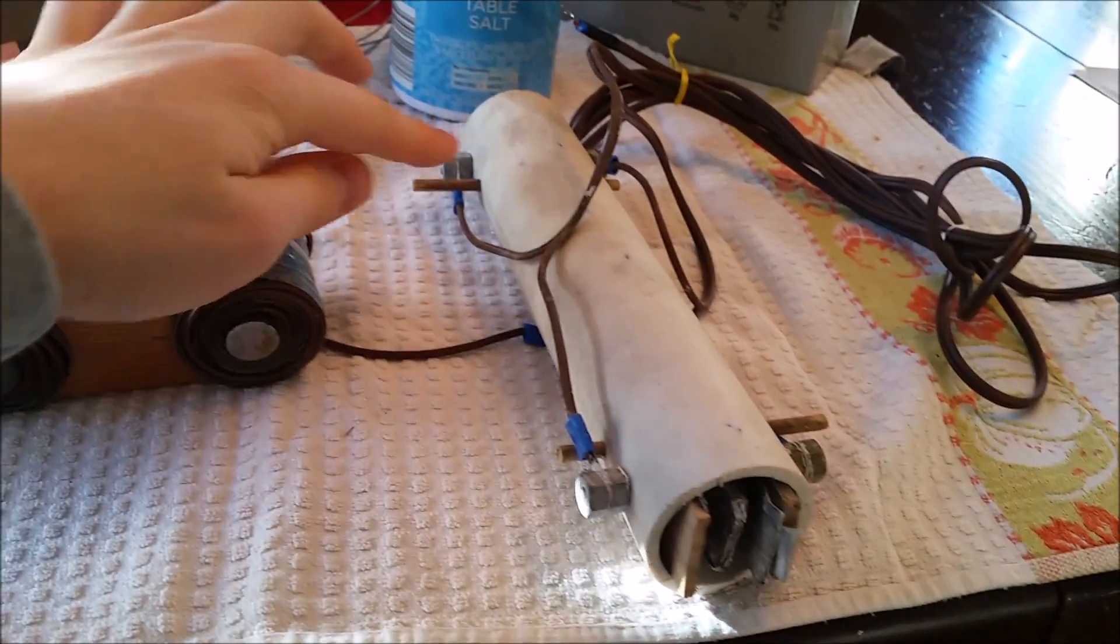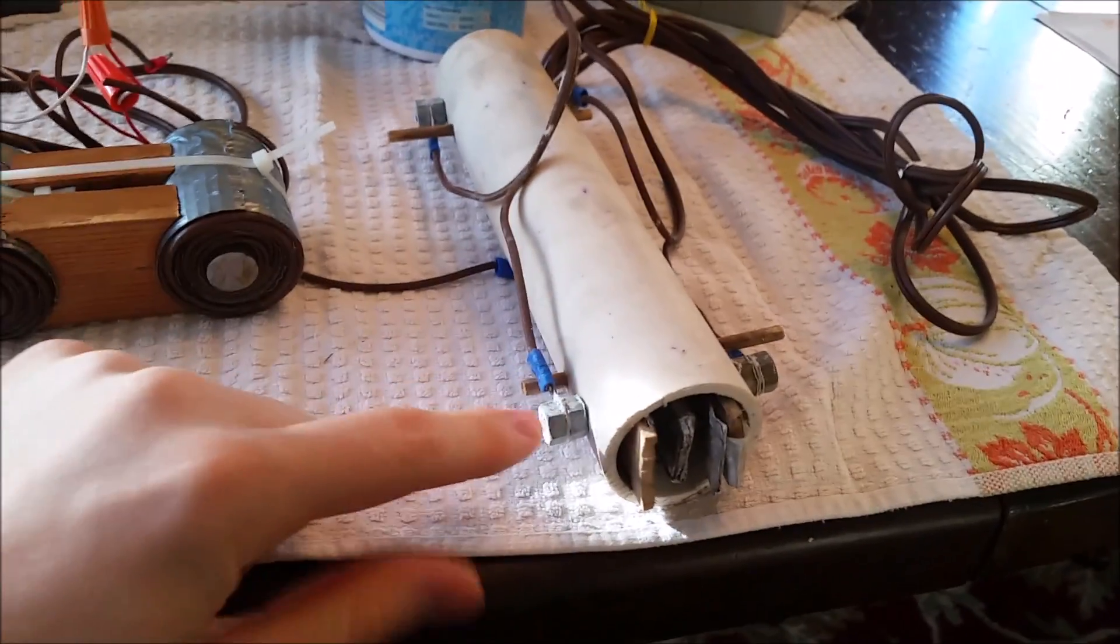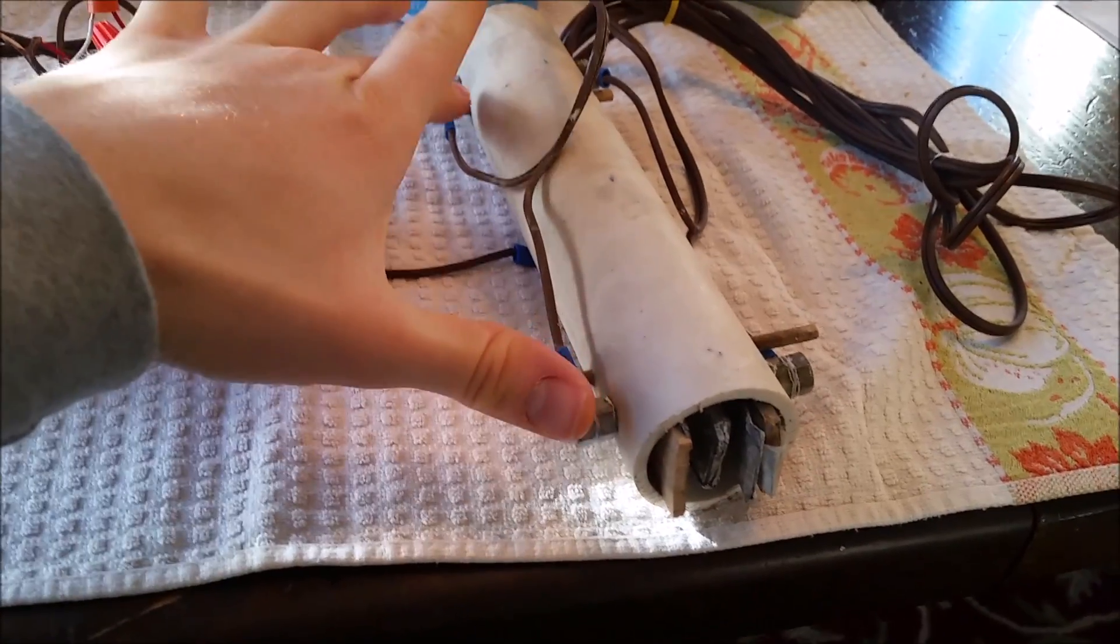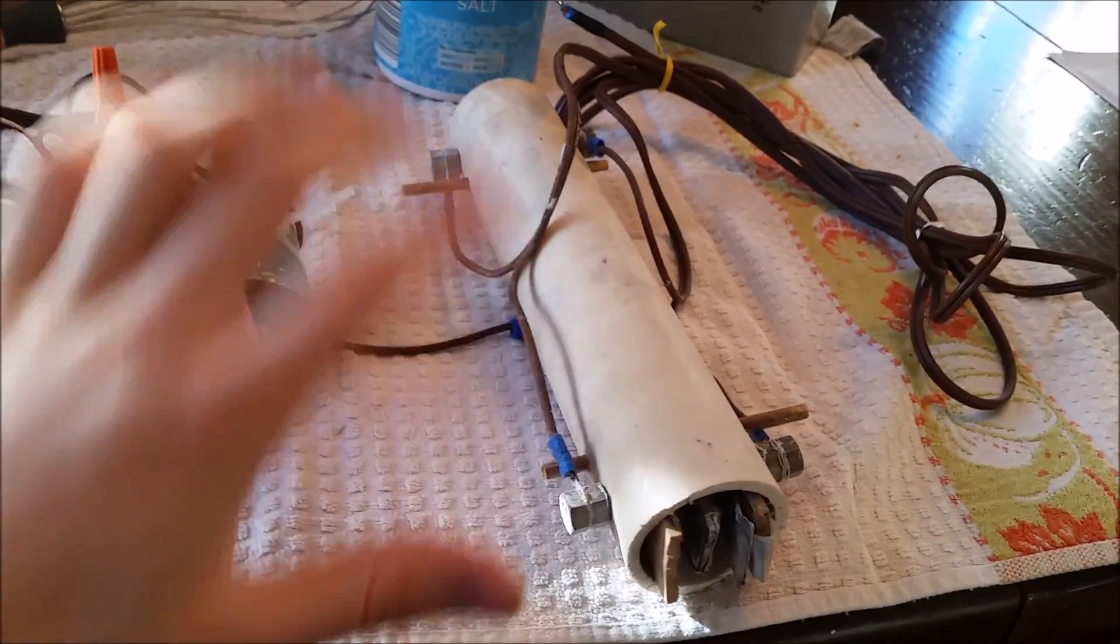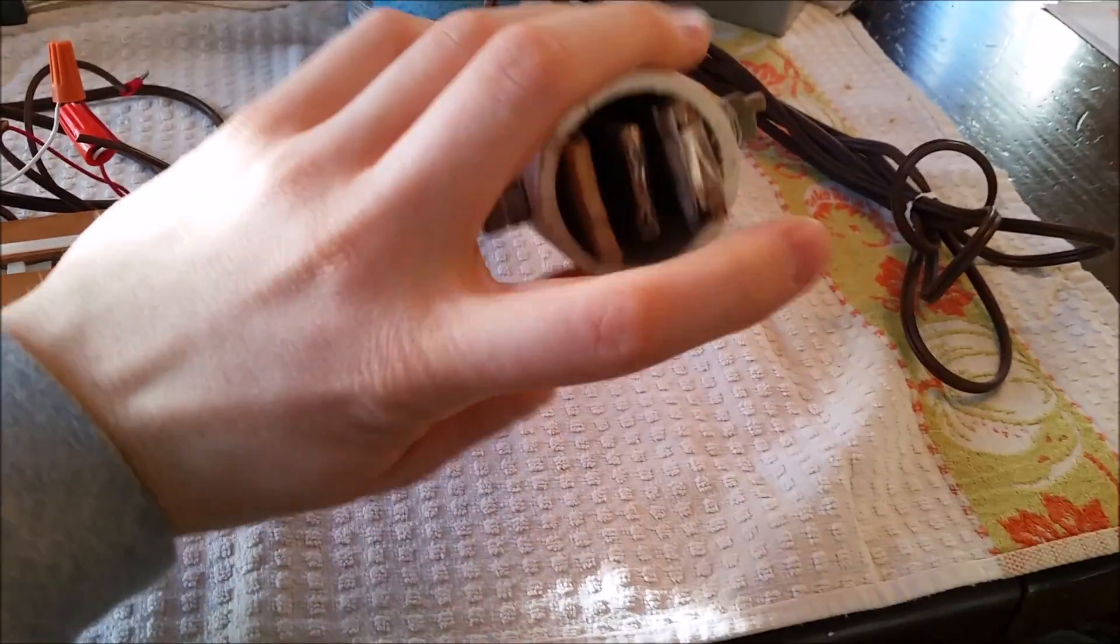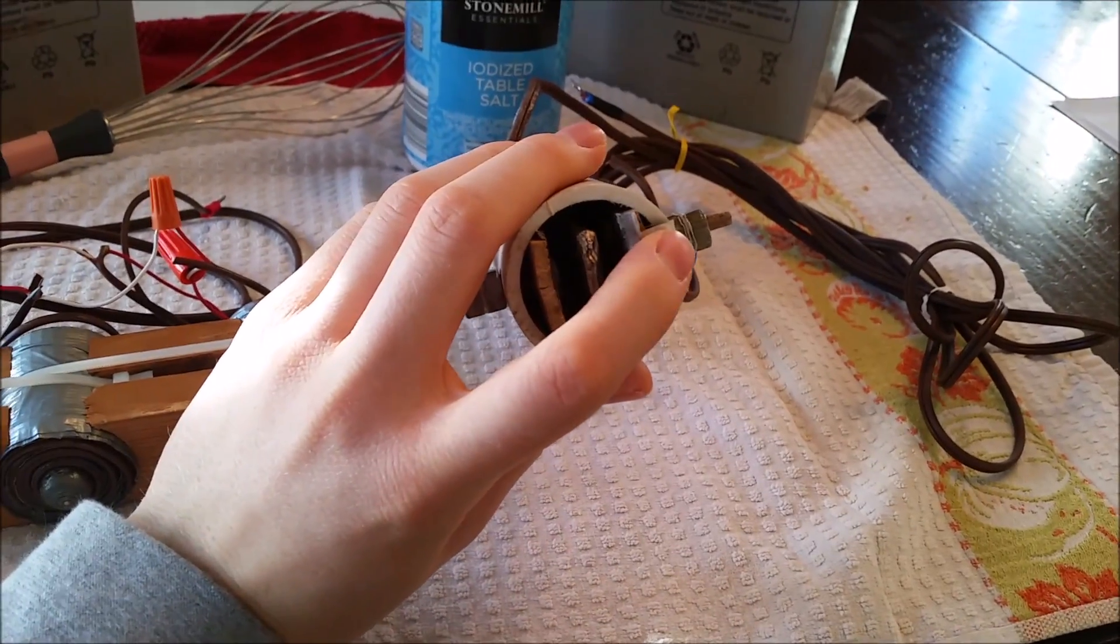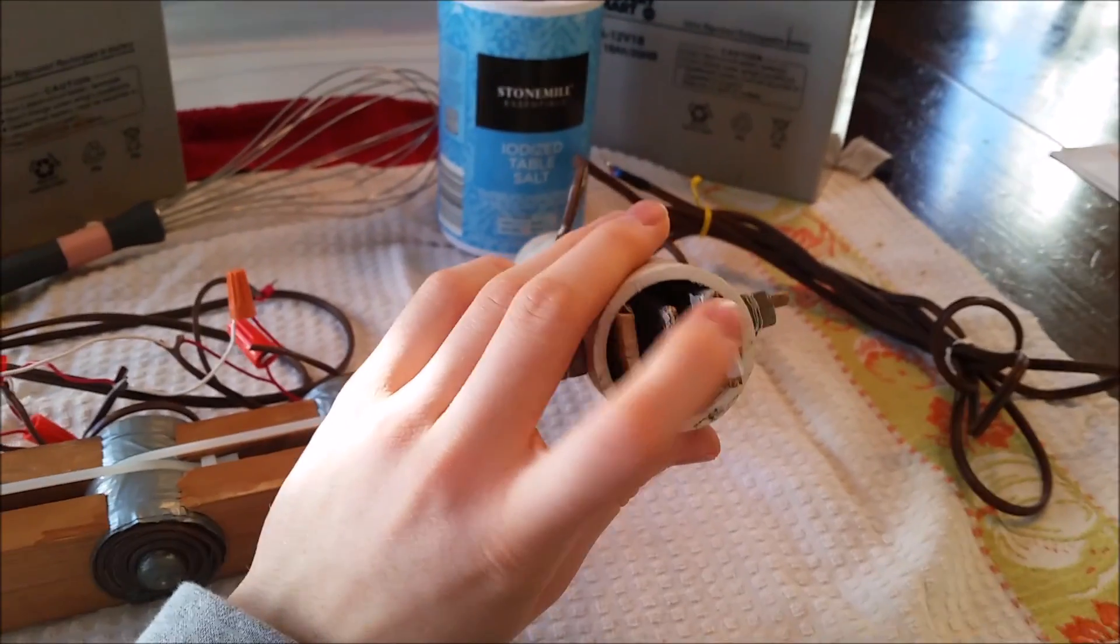Each electrode has bolts coming out of it that make contact with the aluminum foil. These are the contact points for each electrode. You apply a positive voltage to one and a negative voltage to the other, creating basically a capacitor. But because it's salt water, the electrons start to flow from one plate to the other plate.